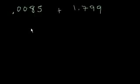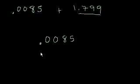Let's start with the first number and rewrite it so we can actually do the math. 0.0085. Now for the second number, let's put the decimal point right below where that first decimal is on the top number and then rewrite the number. So it's 1.799.